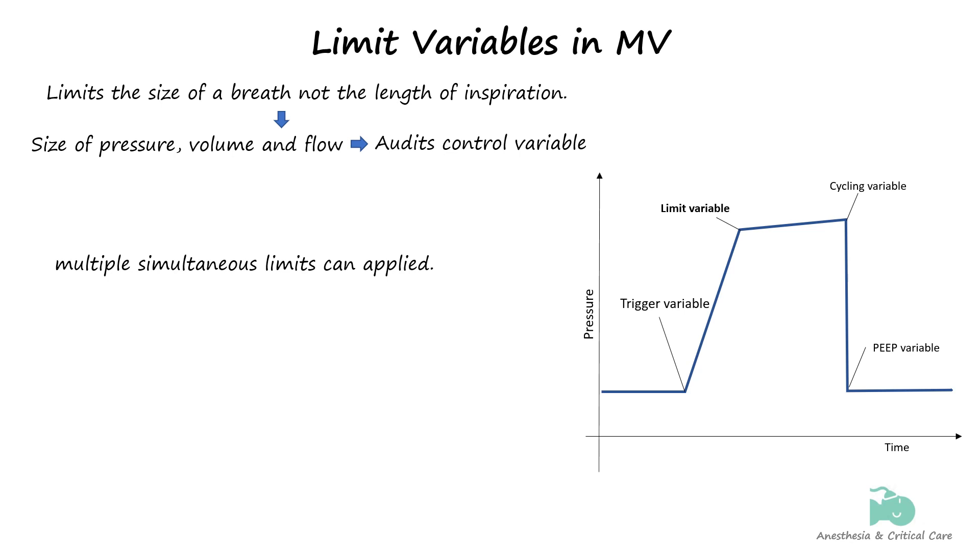In other words, a limit variable is the maximum value a variable can attain during inspiration to prevent lung overdistension, and it refers to the inspiratory phase only.